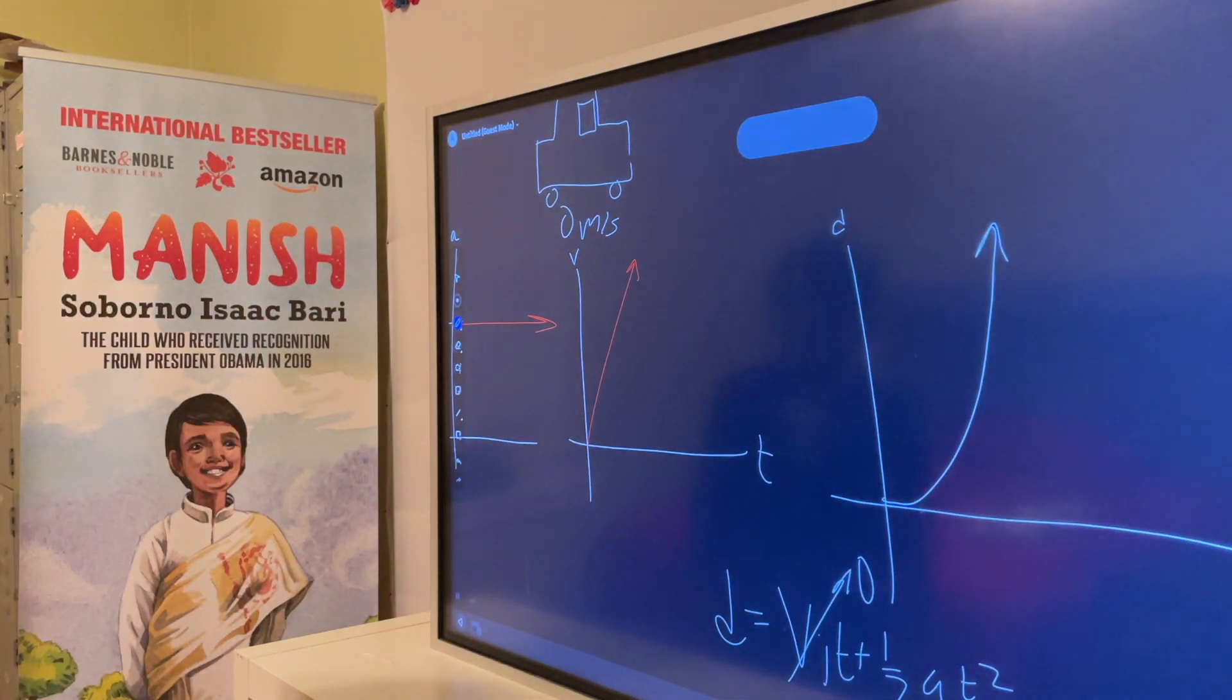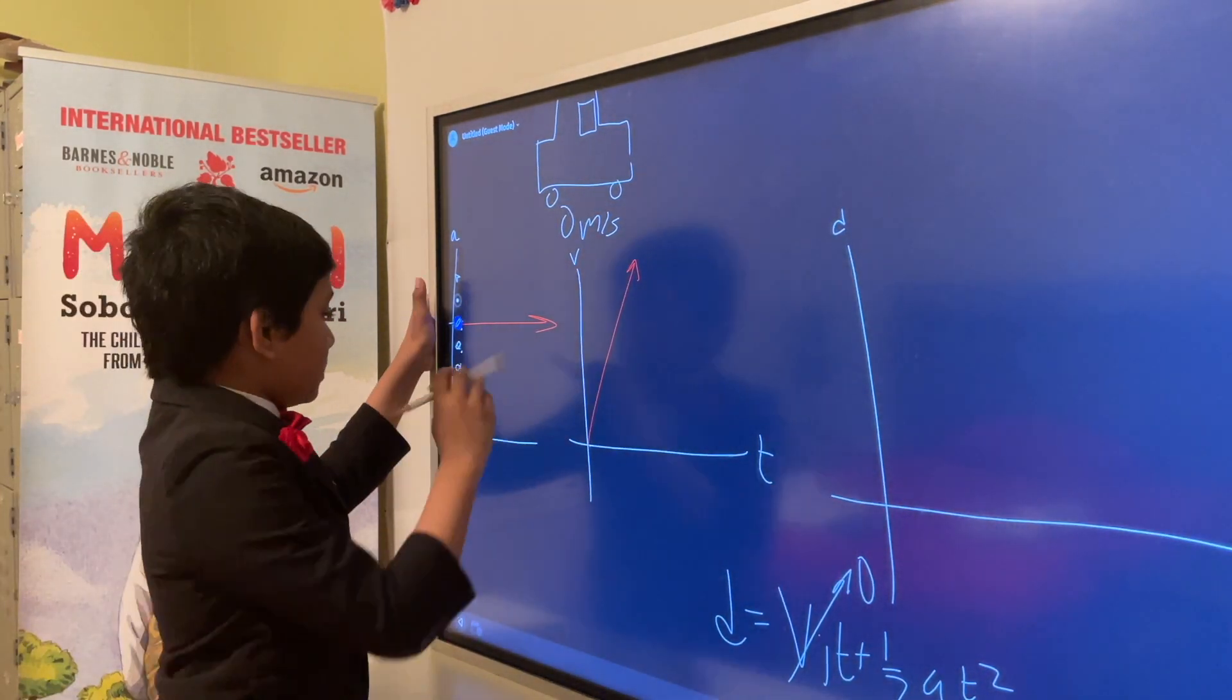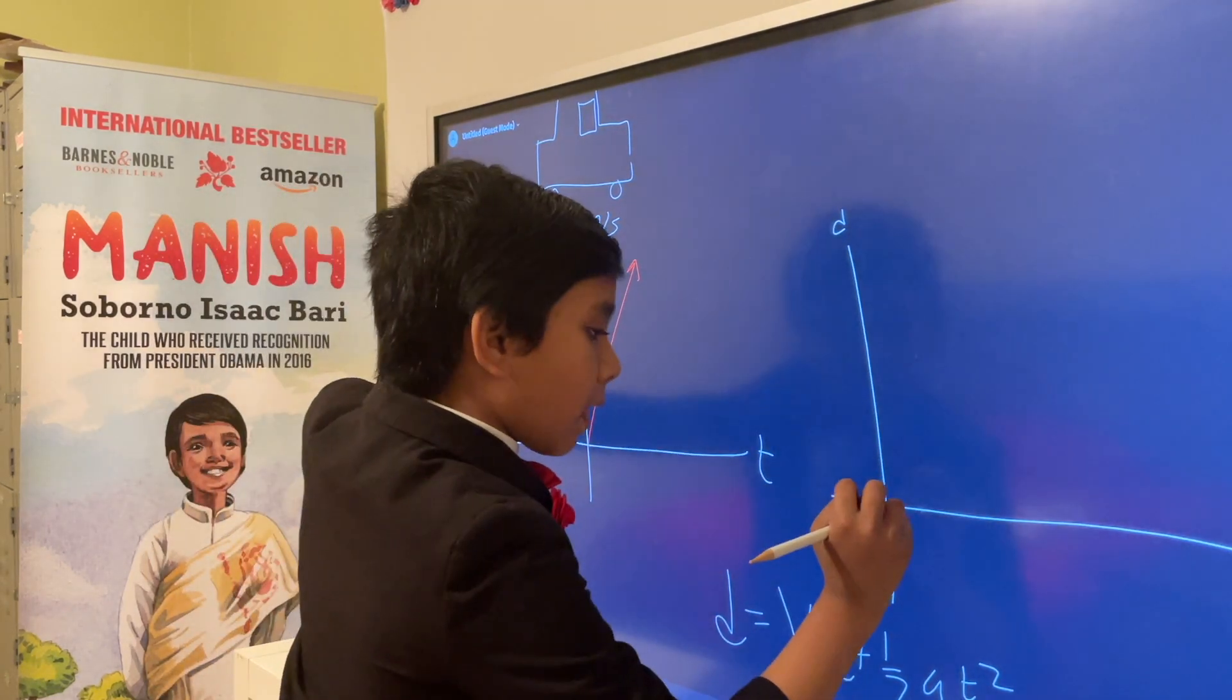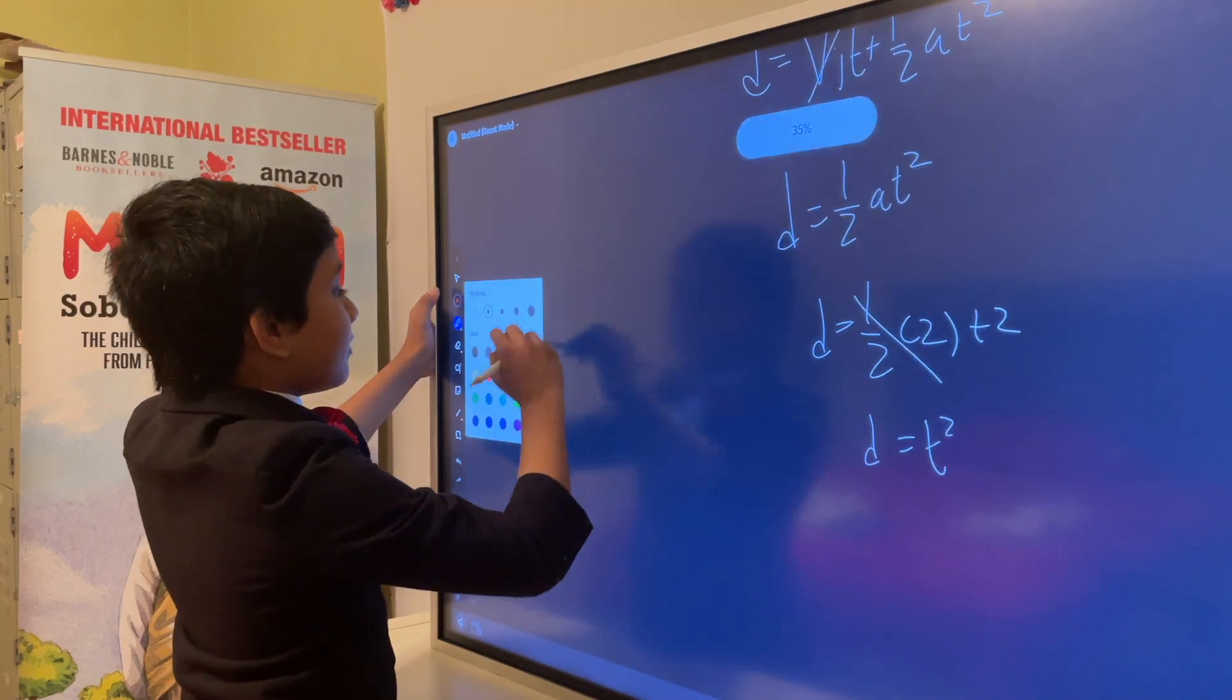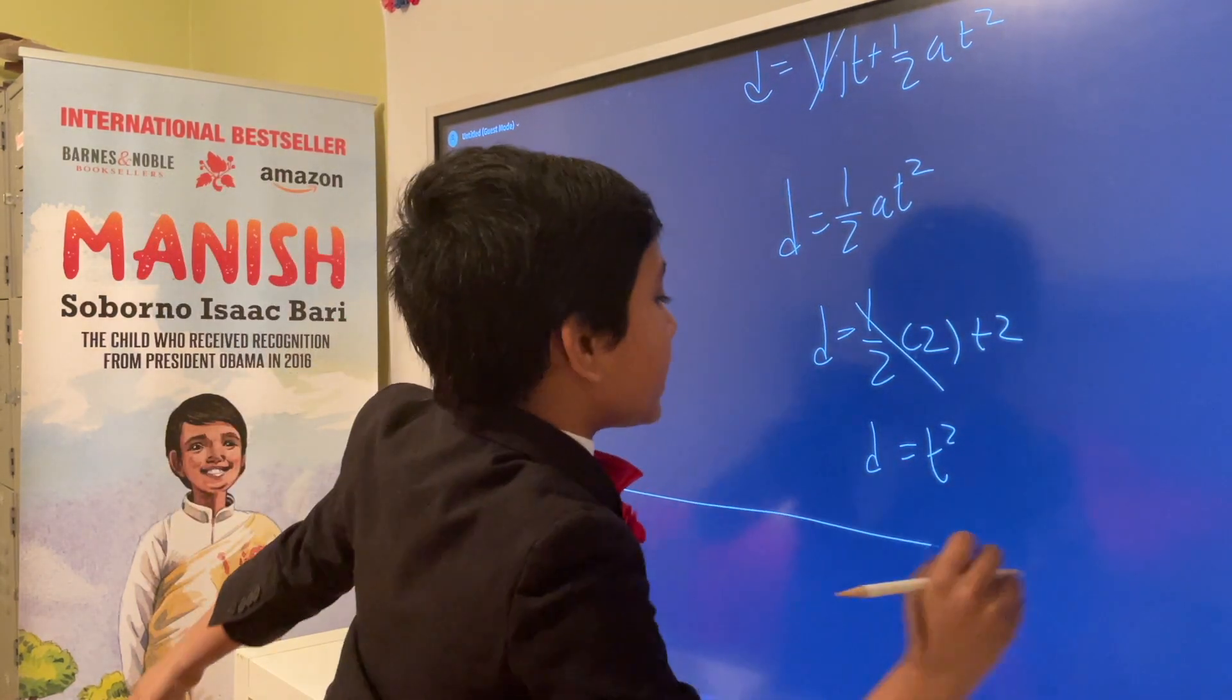Alright! So those are our three graphs for our third scenario with acceleration.